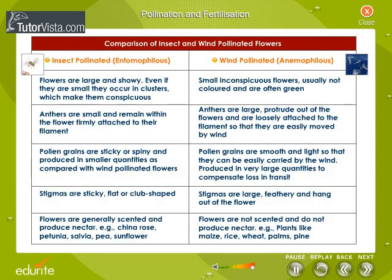A comparison of insect and wind pollinated flowers: insect pollinated flowers are large and showy; even if they are small, they occur in clusters which make them conspicuous. Wind pollinated flowers are small, inconspicuous, usually not colored, and are often green. Pollen grains of insect pollinated flowers are sticky or spiny, and anthers of insect pollinated flowers are small and remain within the flower, firmly attached to their filament.